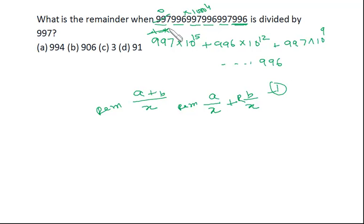Again from here the remainder will be 0. Now again we have 996 into 1000 square, so 996 the remainder is minus 1, and 1000 square the remainder will be 9. So it is minus 9. So from here we are getting the remainder minus 81, from here we'll be getting the remainder is minus 9, and from here we'll be getting the remainder is minus 1.